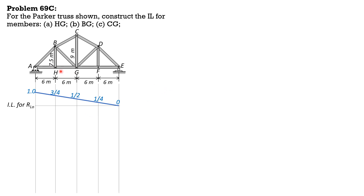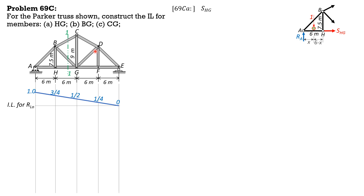For HG, this is a bottom chord and it is expected to be in tension. Let's consider section 1-1 and forces to the left. We have the free body diagram. The angle that BC makes with the horizontal is arctan of 1.5 — where 1.5 is 9 minus 7.5 — over 6, and that is 14.036 degrees. Summation of moments about point B equals 0: S_HG times 7.5 plus 1 times (6 minus x) equals R_A times 6.